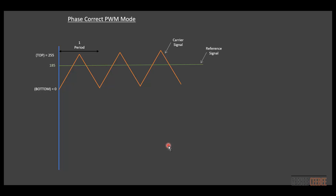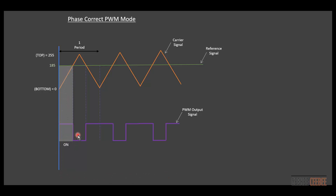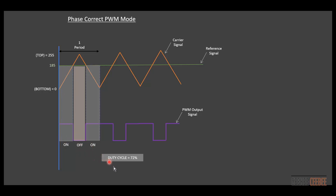We have a reference signal — let's set it to 185. Based on that, we get a PWM output signal. When the carrier signal is below the reference signal, the output is in the on state; when above, it's in the off state, then on again. Overall, we get a 72% duty cycle.